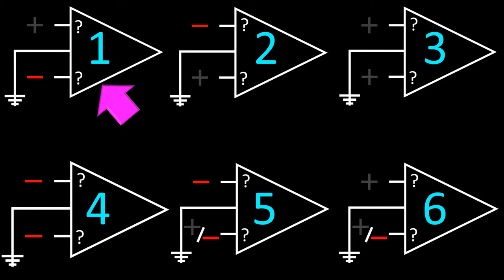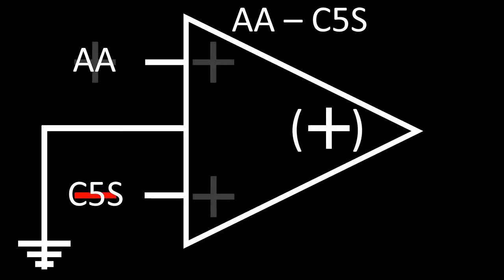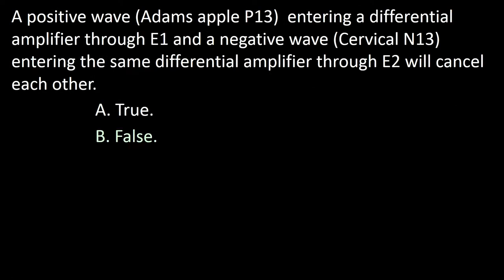Going back to the first differential amplifier polarity arrangement described in the question: positive activity arrives through E1 connected to Adam's apple, and E2 is connected to the neck electrode. The interaction transforms the polarities as equal, so the differential amplifier adds them — augmenting the magnitude of the positive wave arriving through Adam's apple. Therefore the answer to this question is B.